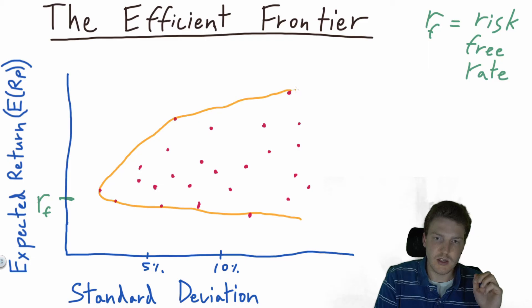So this orange line is the efficient frontier, but then we want to get the point that's the highest on the efficient frontier that's tangential with the risk-free rate. So we see here is the risk-free rate of return.